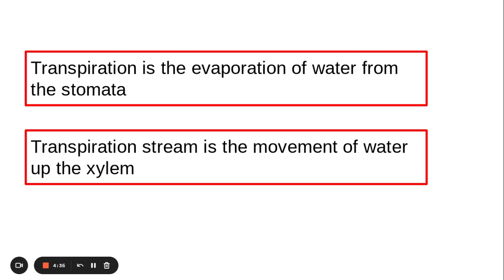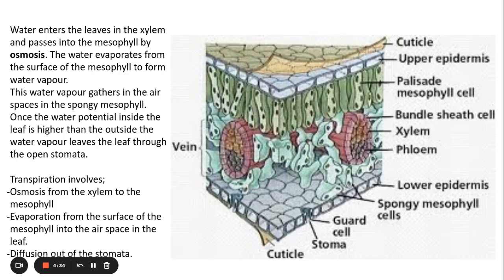Now, water is brought to the leaves in the xylem in this vascular bundle here. It evaporates from the xylem into the spongy mesophyll and it leaves the plant through the stomata or stoma singular (stomata is plural), and the stomata has guard cells on either side of it.